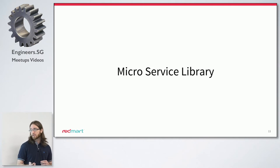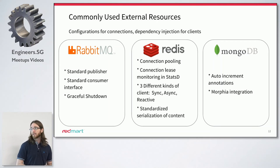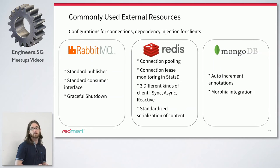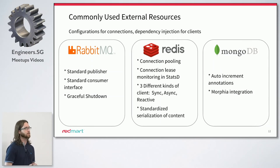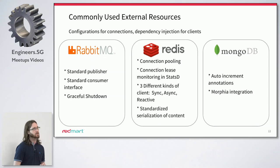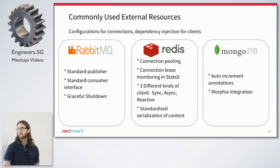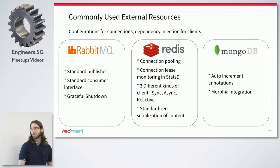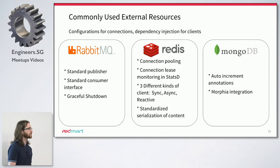The code abstracted away into the microservice library is mainly focused around setting up the external resources that we use. The vast majority of our services use Mongo as their database, the regular majority use Redis for key-value store, and a good number also use RabbitMQ for messaging functionality. We also have dependency injection modules that make it very easy to quickly inject any clients you need to interact with these services. For RabbitMQ, we have a standardized publisher, a standardized consumer, and we also make sure that when the server exits, all your connections are closed gracefully.